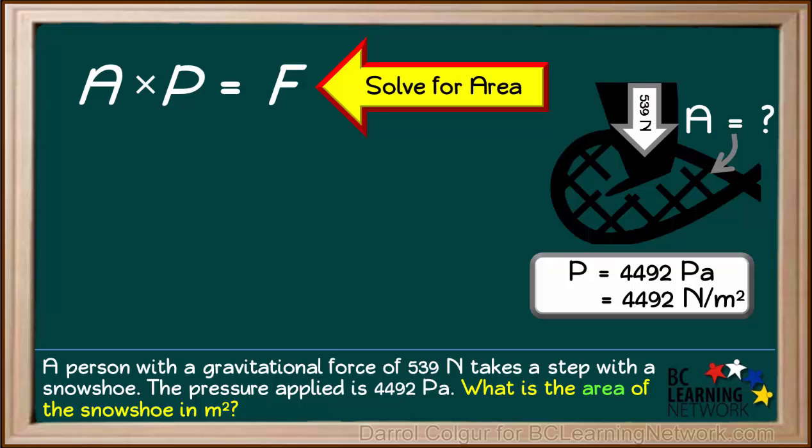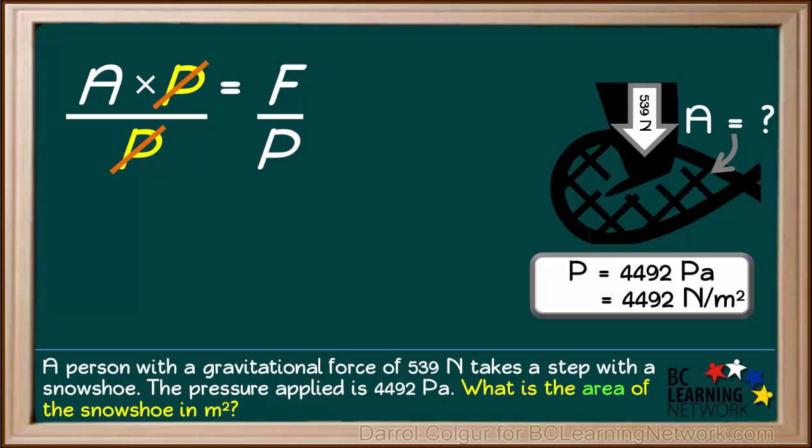In order to solve this equation for A, we divide both sides of the equation by P. P is in the numerator and the denominator on the left side, so it can be cancelled, leaving us with only A on the left side.